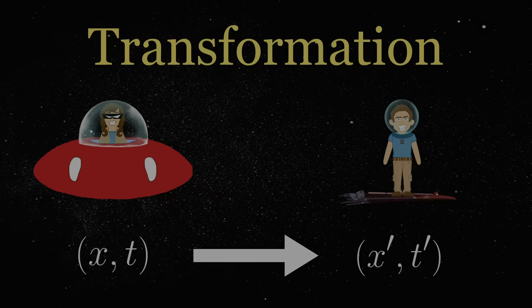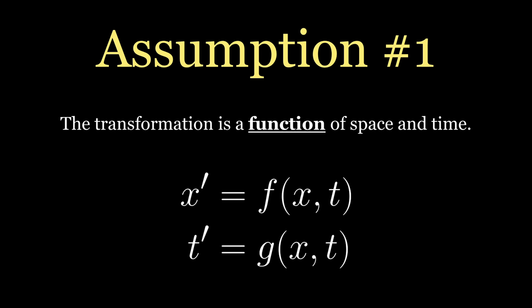Assumption number one. The transformation is a function of space and time. That's not so bad, right? After all, the whole point of this thought experiment is to transform from Annie's coordinates into Jim's. It also tells us that we can ignore such factors as the temperature of the meter stick and the metallic composition of the clocks.